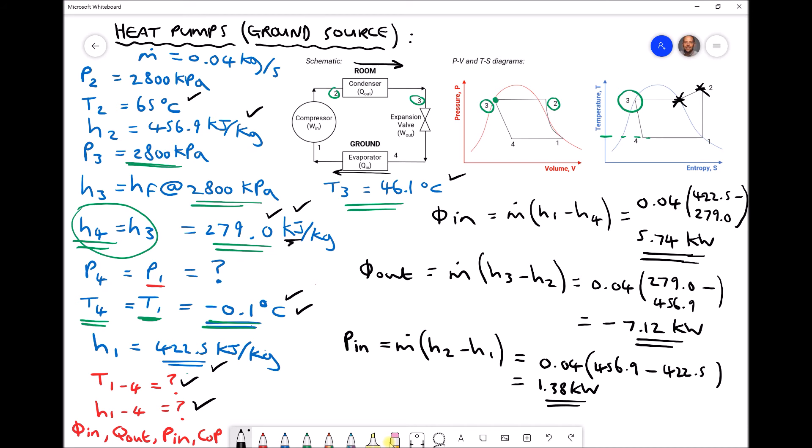So the final calculation, then, is the coefficient of performance. Now, coefficient of performance is an interesting parameter, because what the coefficient of performance tells us is how much heat energy is being supplied to the room when compared to the amount of work or electrical energy being consumed by the compressor.